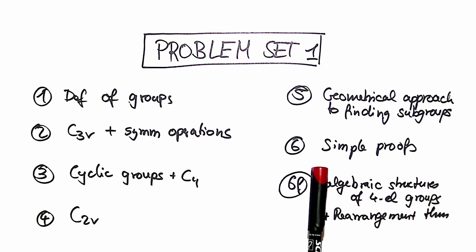In problem six we're doing some proofs for properties of groups or symmetry operations. Some are solved geometrically, some are solved mathematically, and in problem 6F we're looking at a funny result for four element groups and the repeated use of the rearrangement theorem. So if you watch that video you really know how to use that theorem.